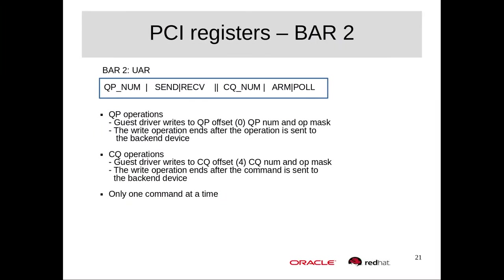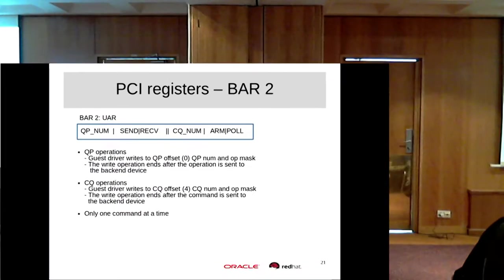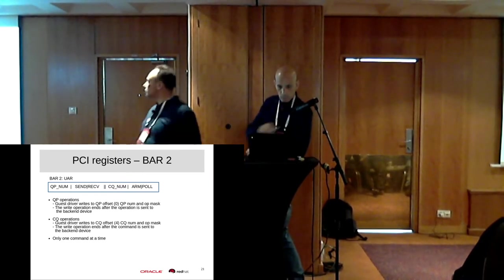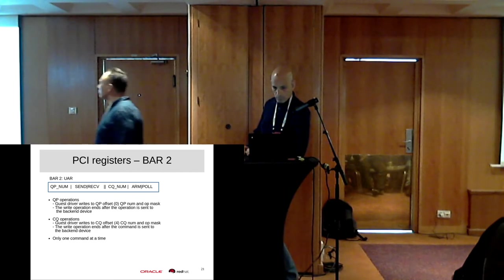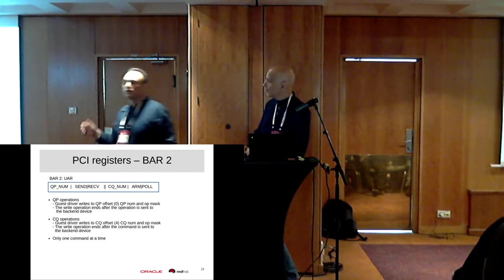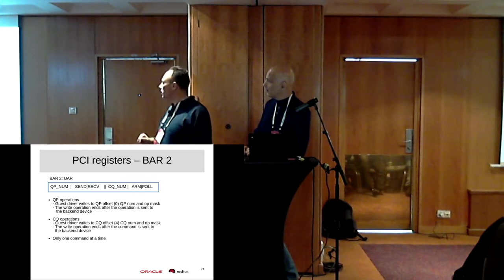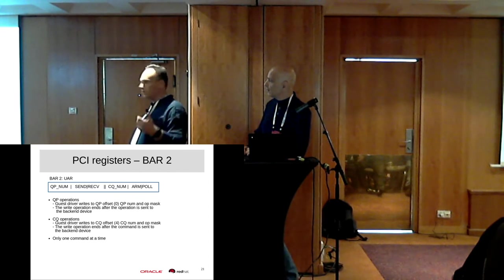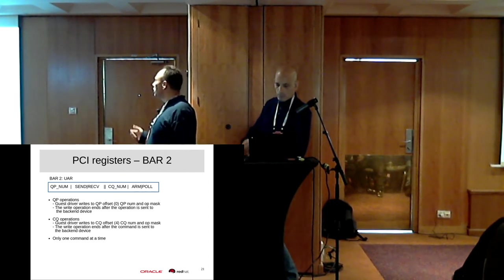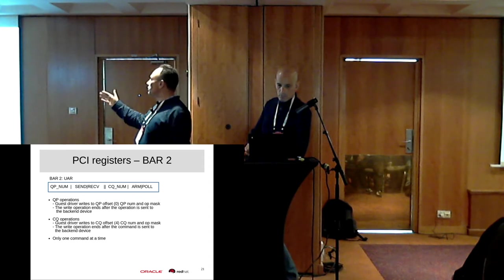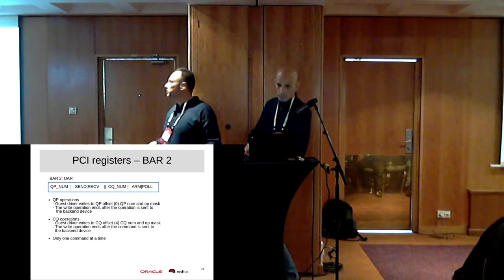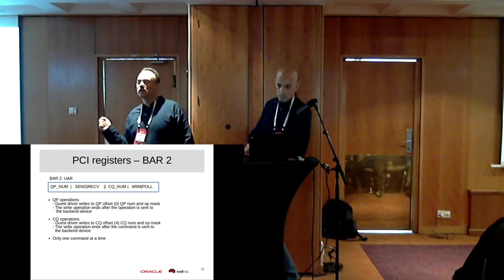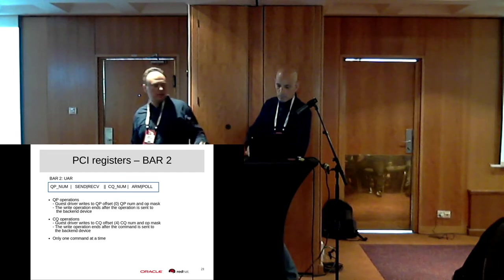A QP number is like a TCP port number. To send, you specify the QP number and a pointer to the buffer, then ring a bell on the common channel. For receiving a packet from the network, you specify the completion queue number you want to receive the message on, specify whether you want to poll or be interrupted, then ring a bell and wait patiently until the packet arrives.